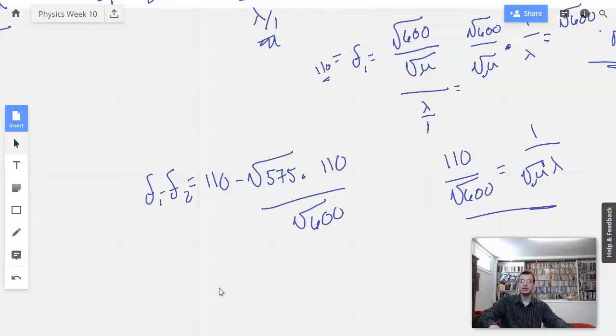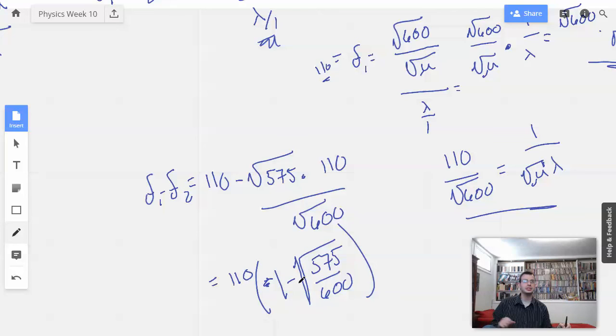Interesting. I'm going to simplify this a little bit. 110 minus square root of 575 over 600.